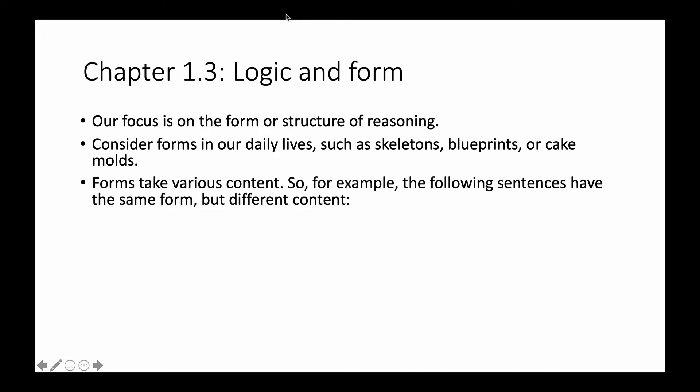Forms take various content. For example, on top of skeletons you have blood, guts, organs, and skin. Blueprints are enacted by constructing a home, where you have a structure and a frame, and then you build onto that around it. Similarly, we can think about sentences as having form, but sentences with the same form having different content.